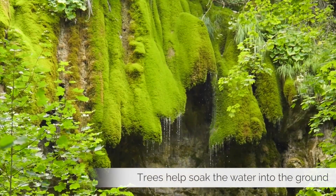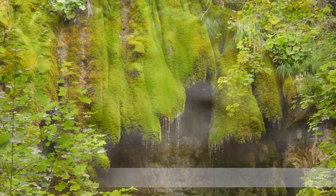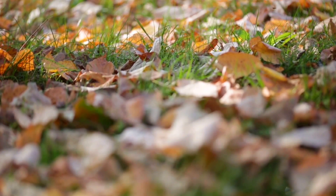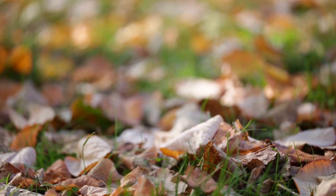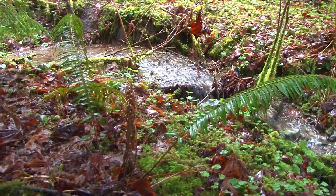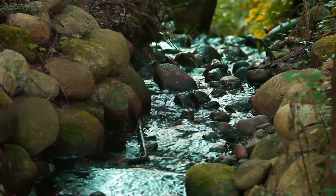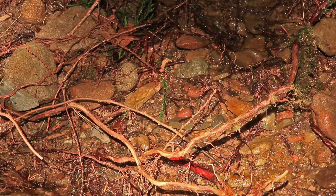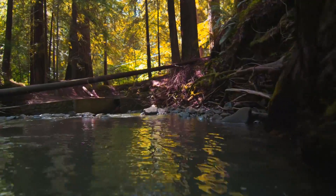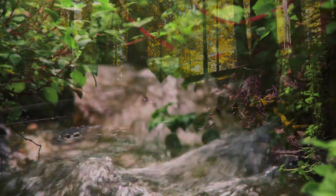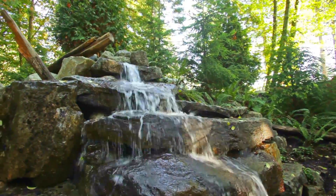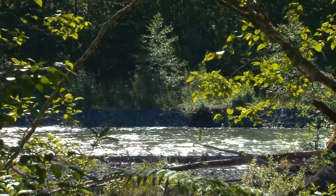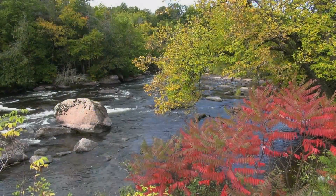Trees then help soak the water into the ground. The rainfall on the forest floor soaks into the top layer of soil, which the trees have helped to make healthy and absorbent. The water captured by this spongy soil gradually filters down through channels created by the trees' roots and soil organisms into the underground waterways of the water table. From here, gravity continues to draw the water through the earth until it emerges as a spring that feeds streams and rivers, or until it is drawn up from the ground through wells.